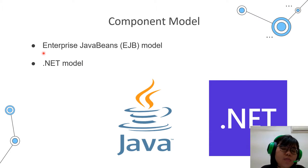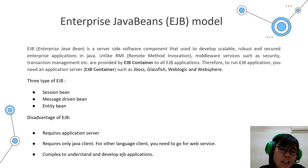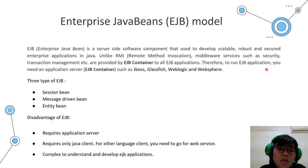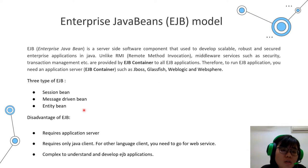I, Ho Jia Hui, will present and introduce EJB. So what is EJB? EJB is a server-side software component used to develop scalable, robust, and secure enterprise applications in Java. To run an EJB application, you need an application server — also called an EJB container — such as JBoss, GlassFish, WebLogic, and WebSphere. There are three types of EJB.